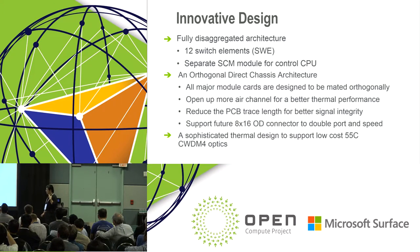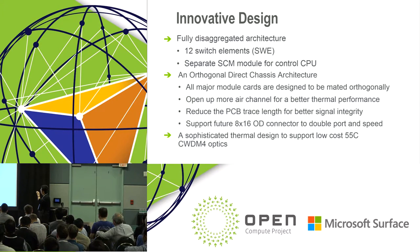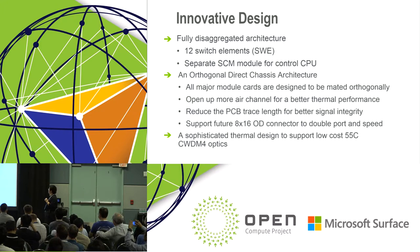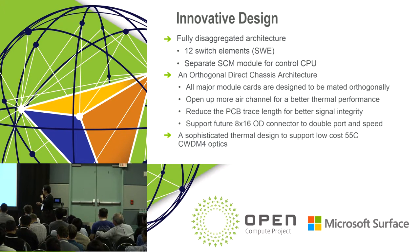Based on those challenges, we came out with this innovative design. First, it's a fully disaggregated architecture with 12 switch elements. The second is orthogonal direct chassis architecture. We decided to use an orthogonal direct architecture because we want to optimize for SI and for thermal. All the major module cards inside this chassis are mounted orthogonally — line cards horizontally, fabric cards vertically. The SCM is vertical and the HCP is horizontal, making them orthogonal.